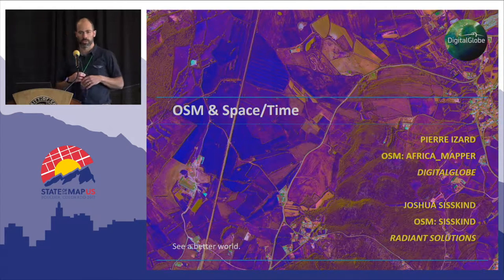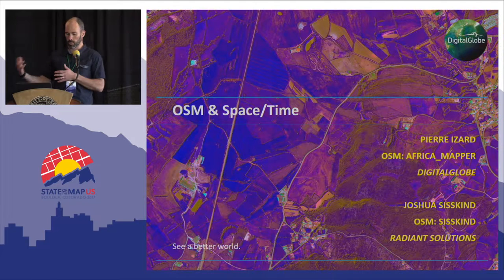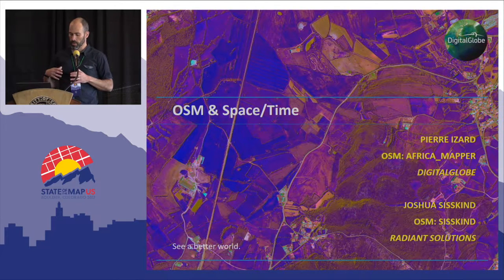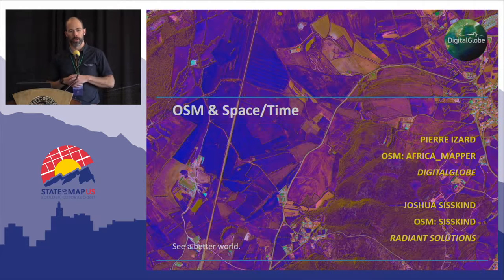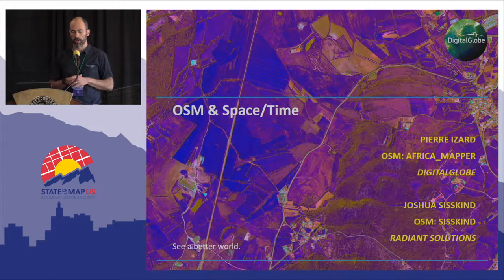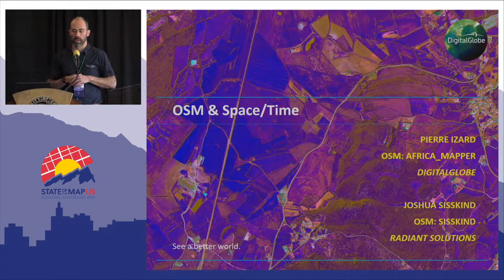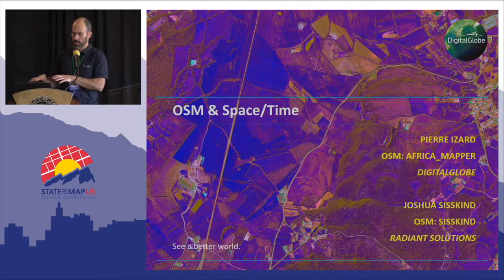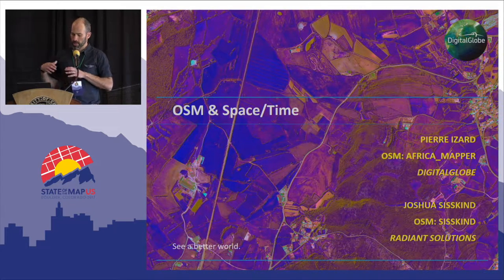Josh comes from Radiant Solutions, a group based in Washington, D.C. They're a division of Maxar, which is our new parent organization — we have four divisions, so Digital Globe is now part of a broader company. Radiant is really focused on mapping solutions for the U.S. government and other sectors, and all the work they're doing is tied to the iD editor.